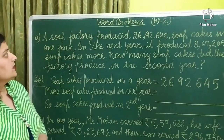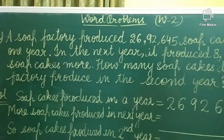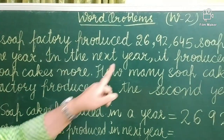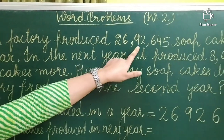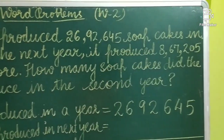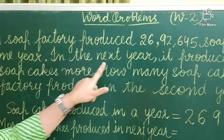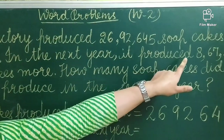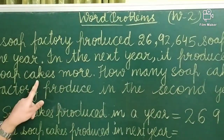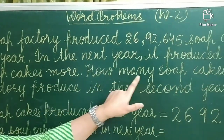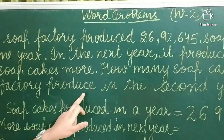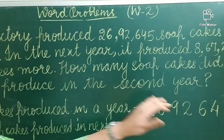So let us start. The first question is: a soap factory produced 26,92,645 soap cakes in one year. In the next year it produced 8,67,205 soap cakes more. How many soap cakes did the factory produce in the second year?